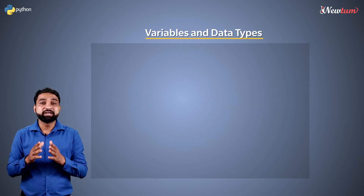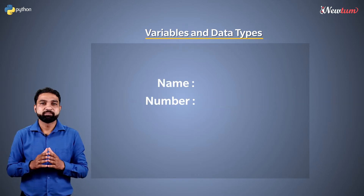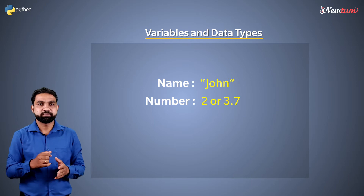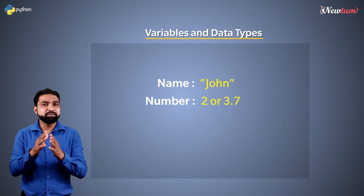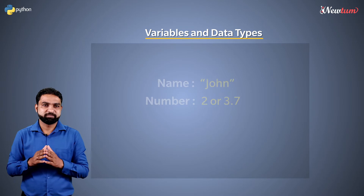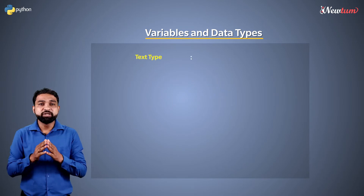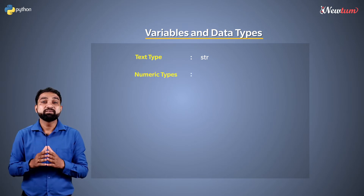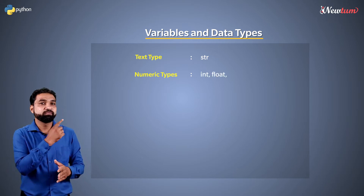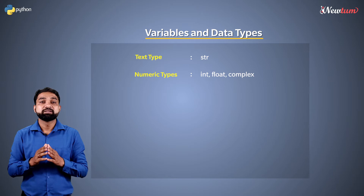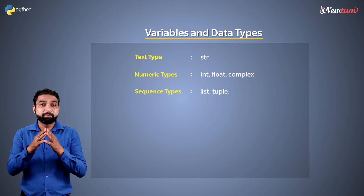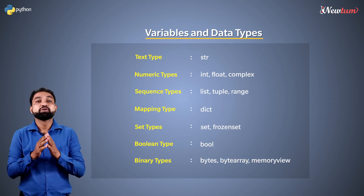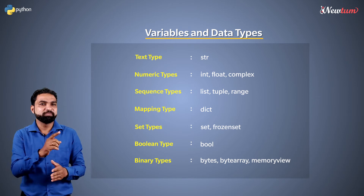This variable stores data like name, numbers, etc. The name is a string. The number could be an integer or a decimal. Python has many built-in data types and they are categorized like this. We have text type which includes string, and str is the keyword for the string. Then we have numeric types — it includes int, float, and complex numbers. Then we have sequence types: list, tuple, and range. This is the complete list of default types. Don't worry, we are going to learn all of them one by one.